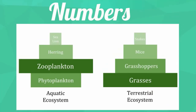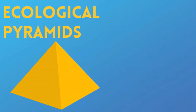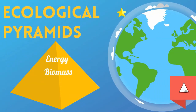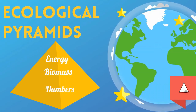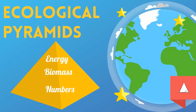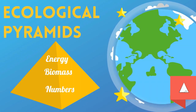And finally a pyramid of numbers. Each level represents the number of individual organisms consumed by the level above it. So there we go — three types of ecological pyramids, which is one way to show how energy flows through an ecosystem.